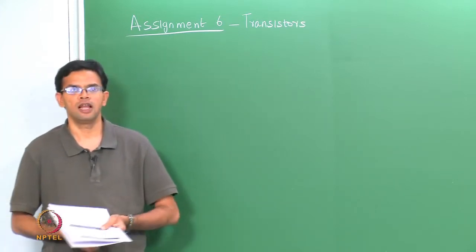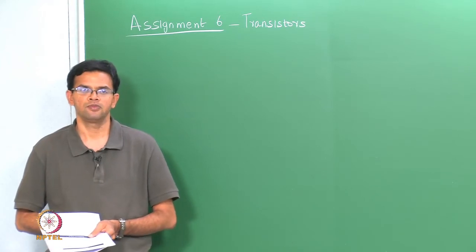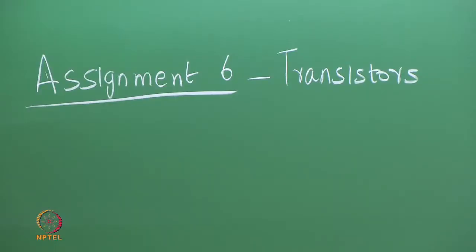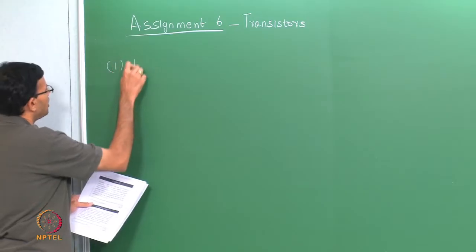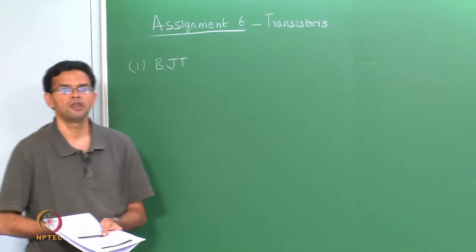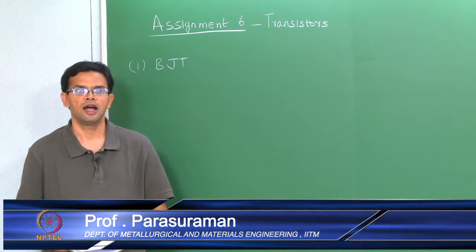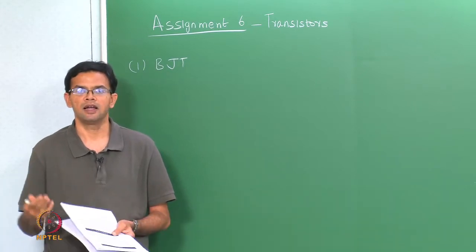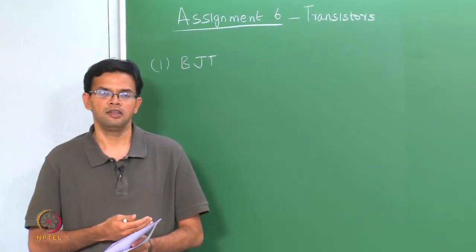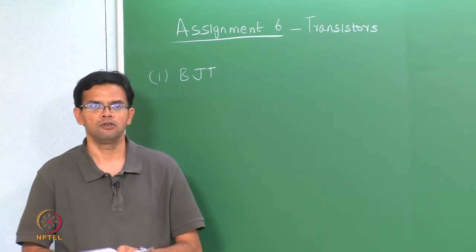During the course of the lecture, we saw the theory behind the transistor action. We saw that there were three main kinds of transistors that we discussed. One was the bipolar junction transistor or BJT. This is essentially a current control device. It had an emitter, base, and a collector, and transistor action occurred when the minority carriers were injected through the base and then moved on to the collector.